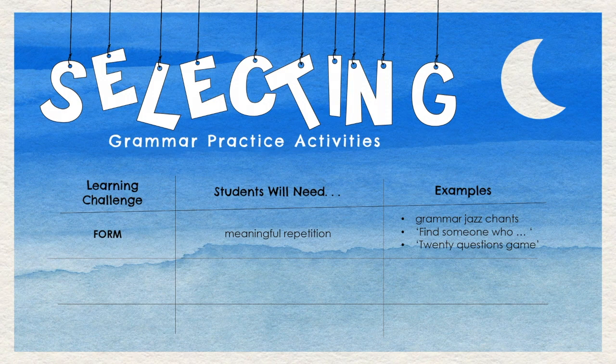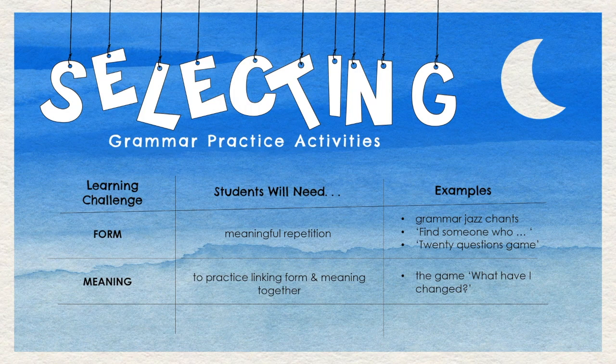If the student's learning challenge is meaning, they will need to practice linking form and meaning together. For example, the game, What Have I Changed? If the student's learning challenge is use, students will need to make a choice. For example, role play a job interview requiring them to use either the present perfect to talk about their experiences, or the past simple tense, specifying when they acquired these experiences.